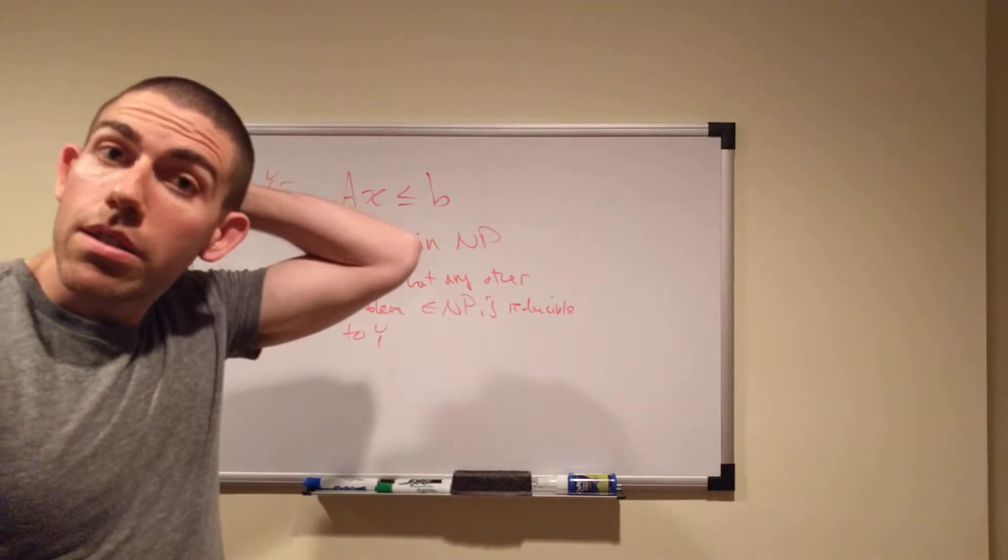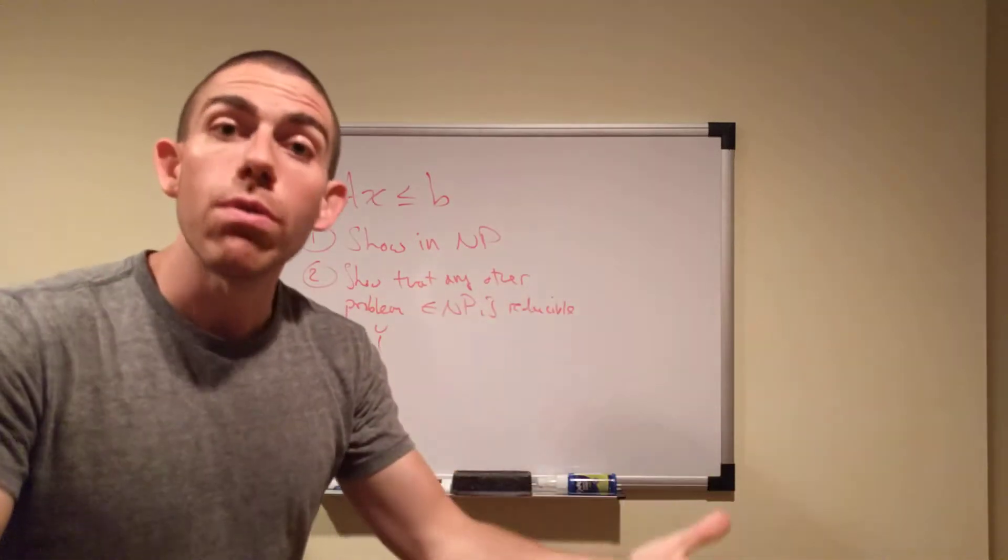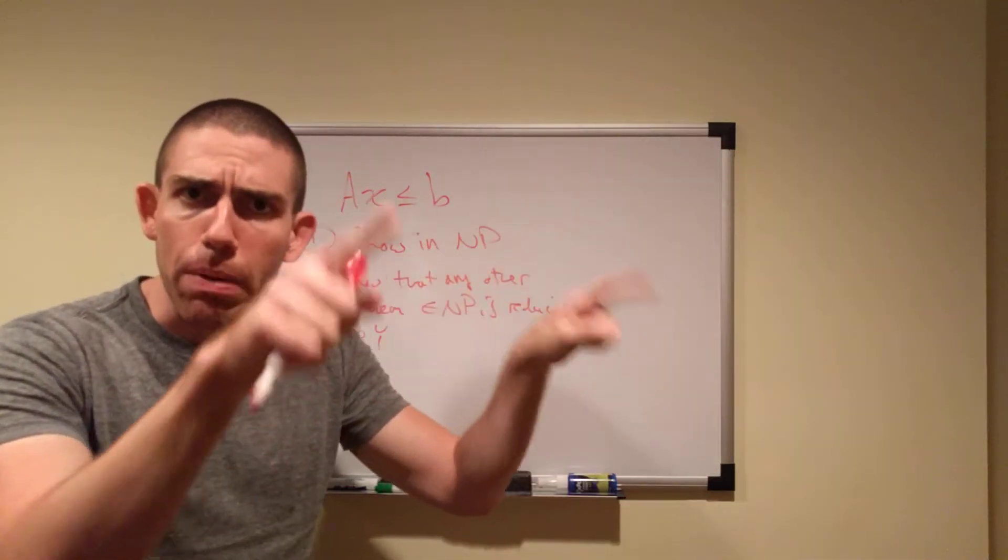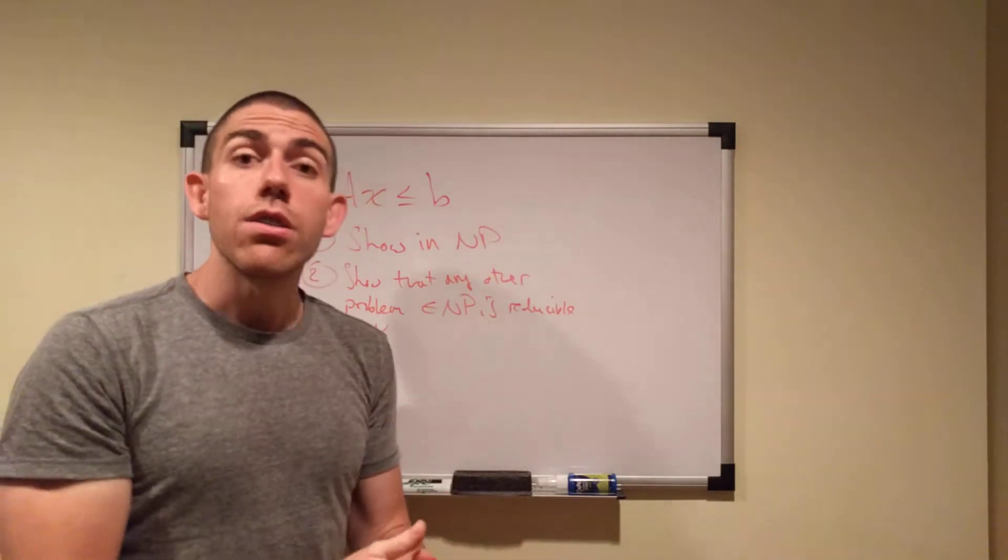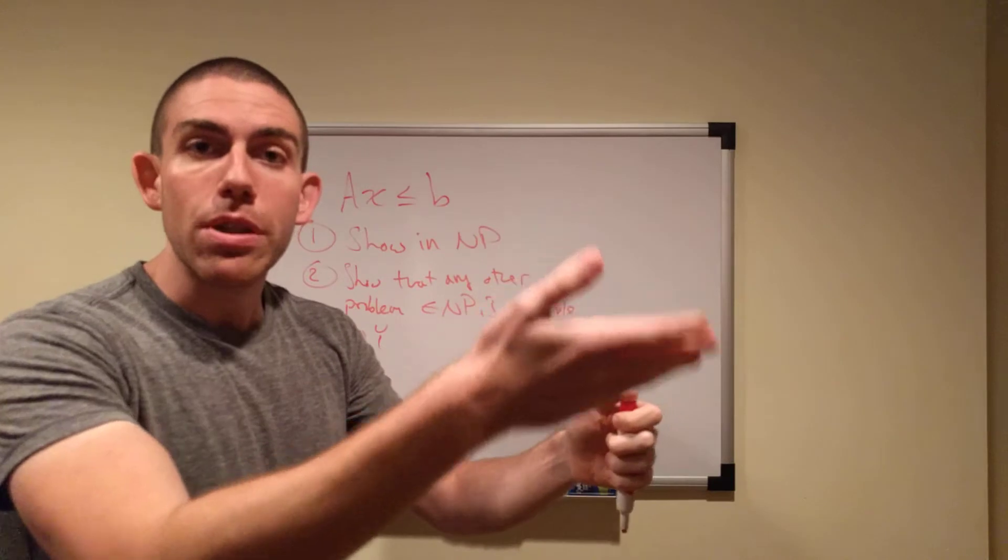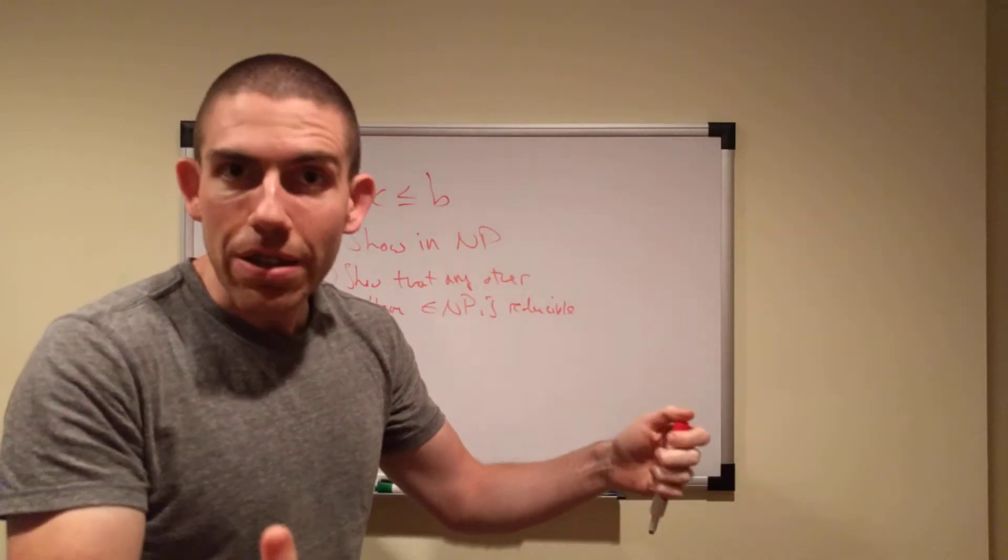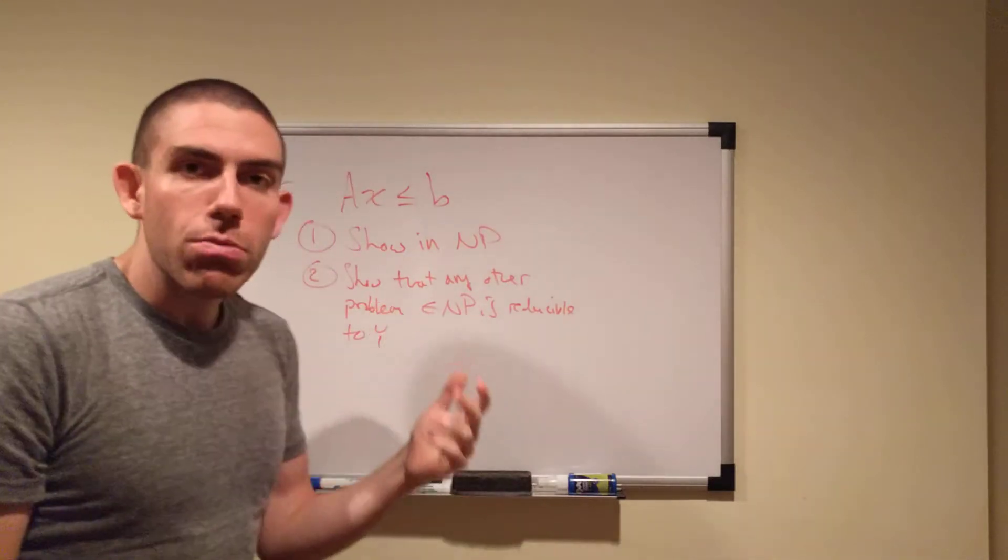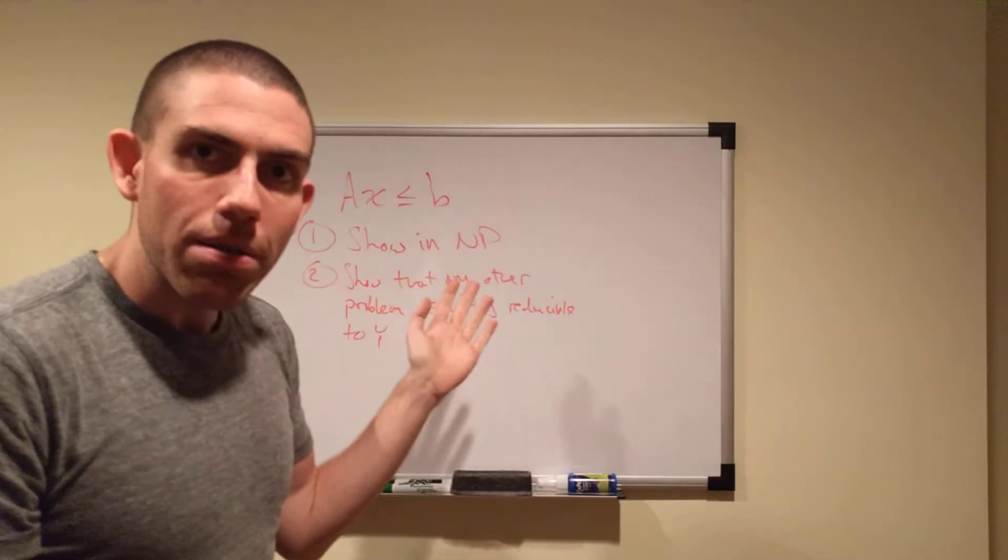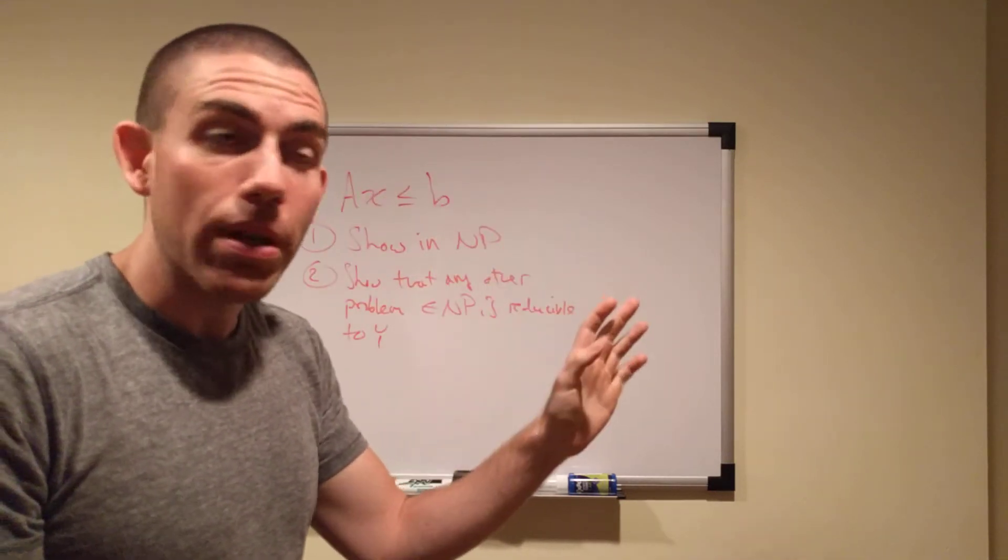To be in NP, the problem has to be of a format such that if I give you a potential solution to it, assuming that you have a black box that can test it, you can just input my solution and the black box will tell you, oh yeah, that's correct, or no, that's not correct. That's it. So as long as I can provide you with some sort of certificate that you can then check for validity, it's in NP. If there's a polynomial time algorithm to check the validity of a certificate, it's in NP.